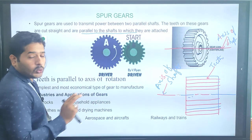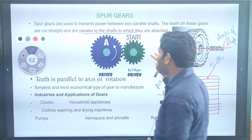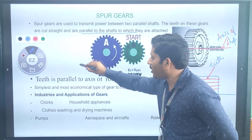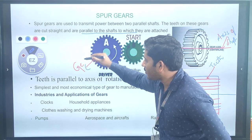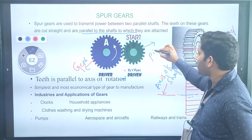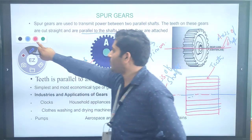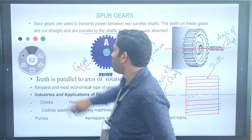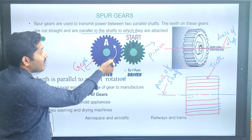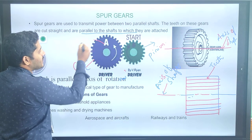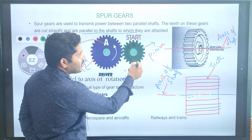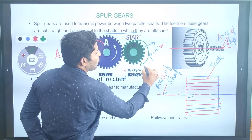We have two shafts: one is the driver shaft and another is the driven shaft. The bigger gear we call a gear, and the smaller one we call a pinion. This driver gear rotates in the anti-clockwise direction, and the driven gear rotates in the clockwise direction.